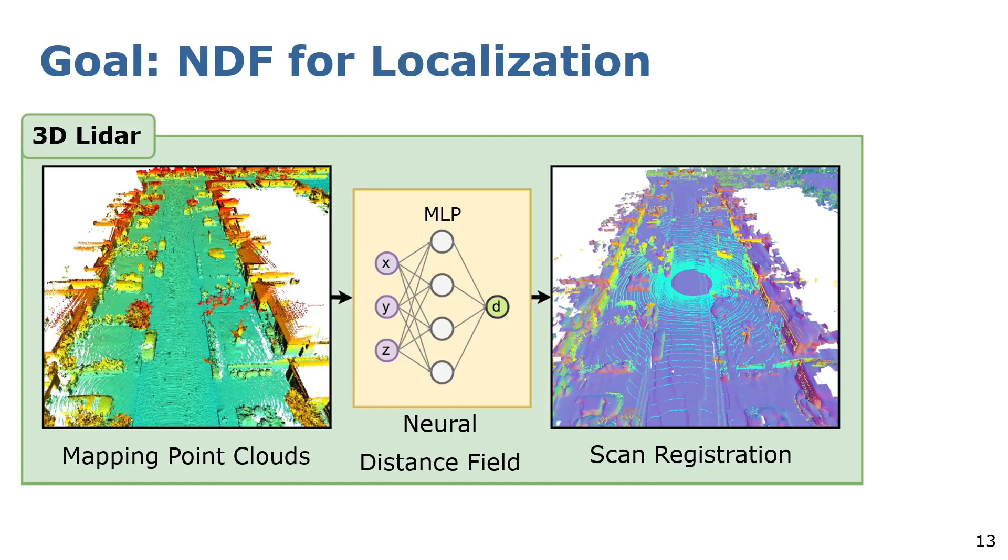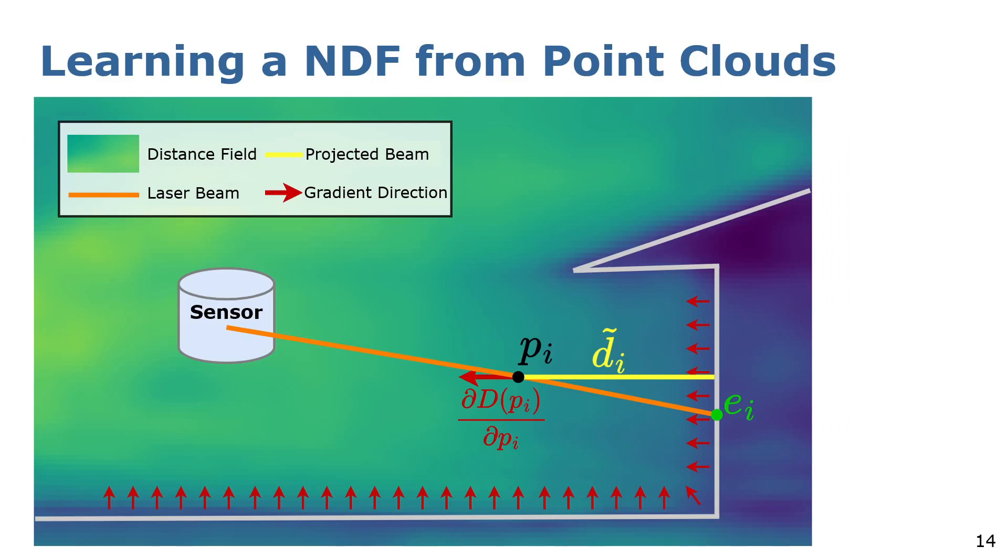Now, we know what we want, but we still need to find a way to learn from the input point cloud representation our neural distance field. And second, we need to see if this representation is also useful for localization. So, first thing we have to do is to construct our map. For learning the neural distance field, we exploit directly the measurement process of the LiDAR scanners. The sensor is measuring the distance from its origin to the surface.